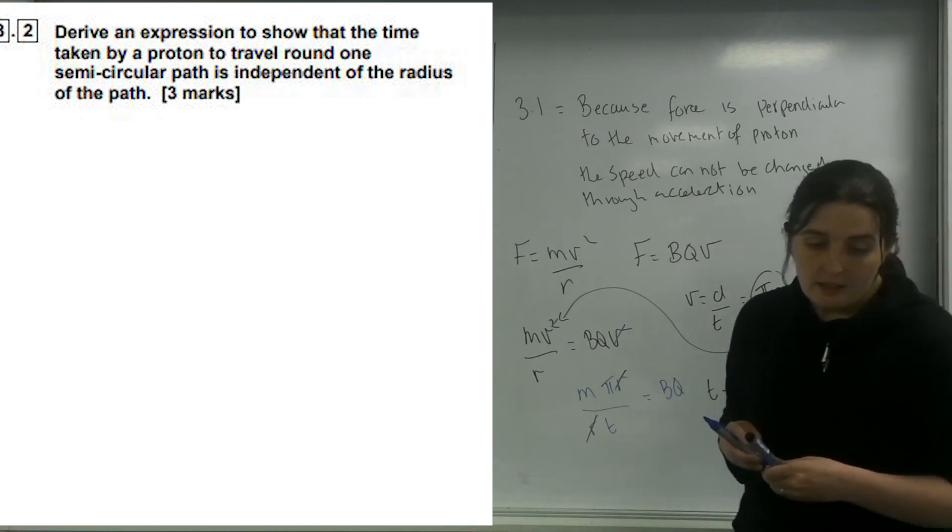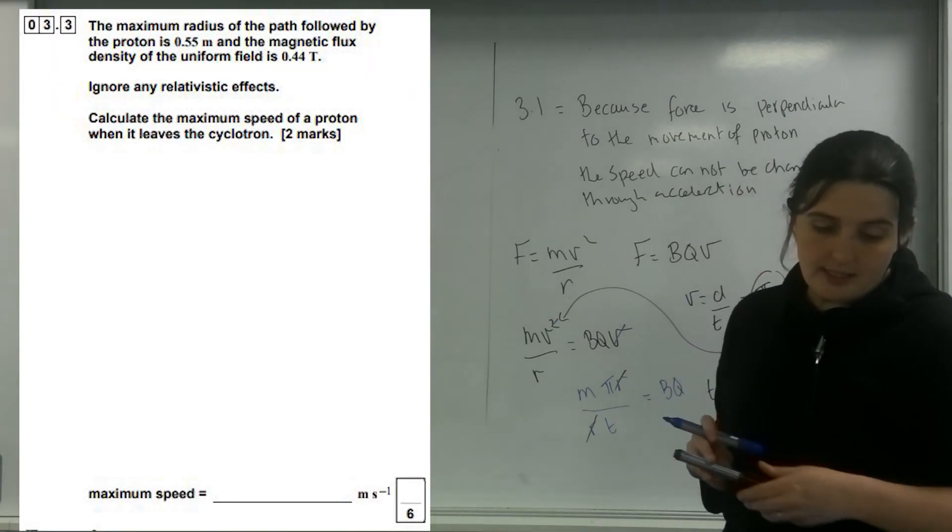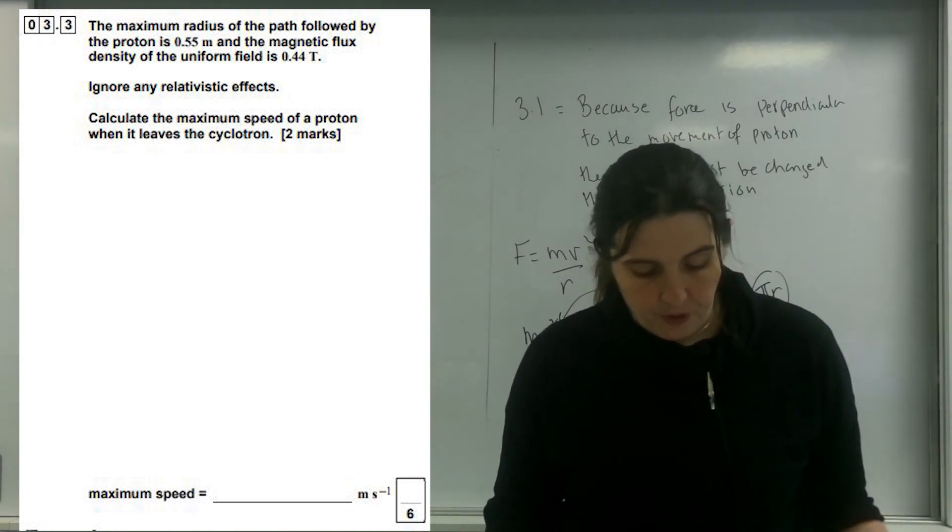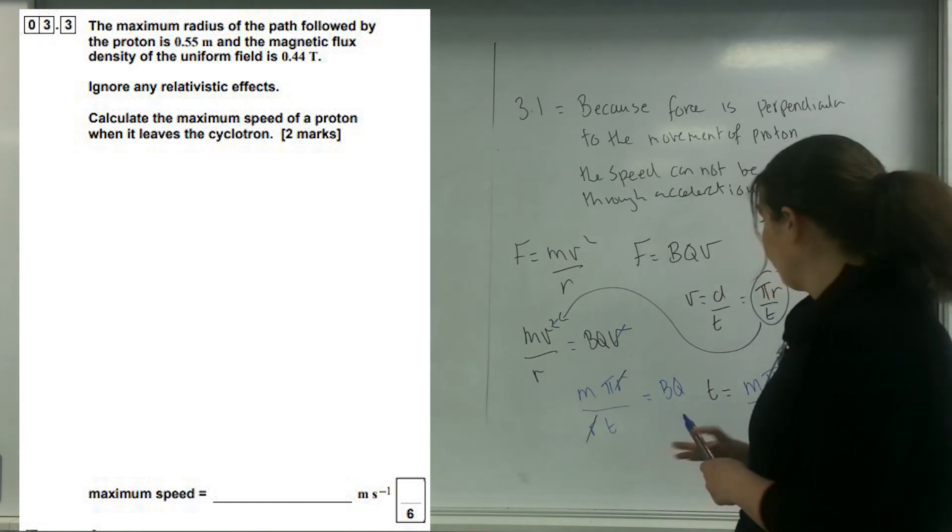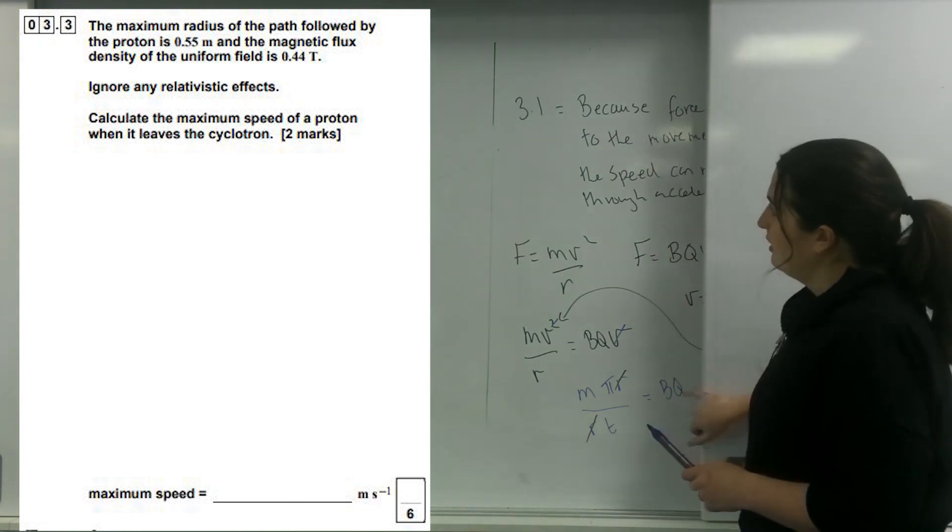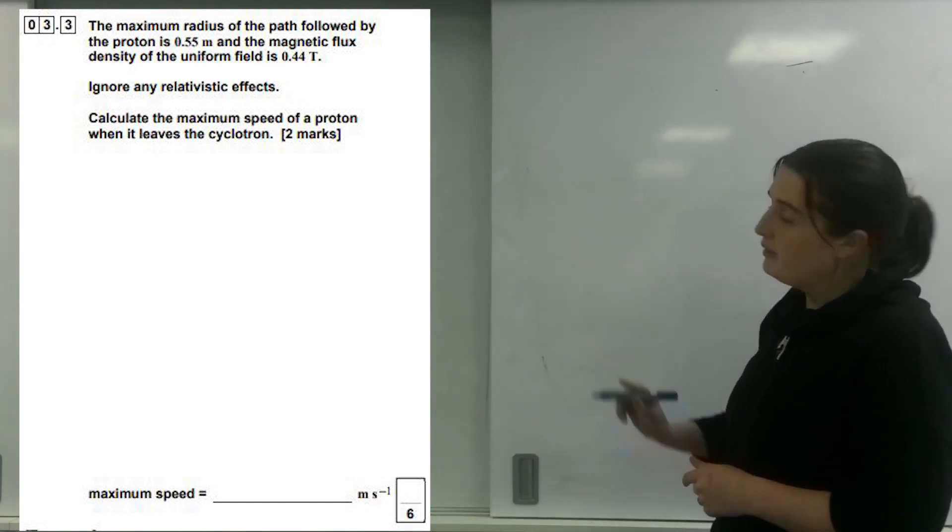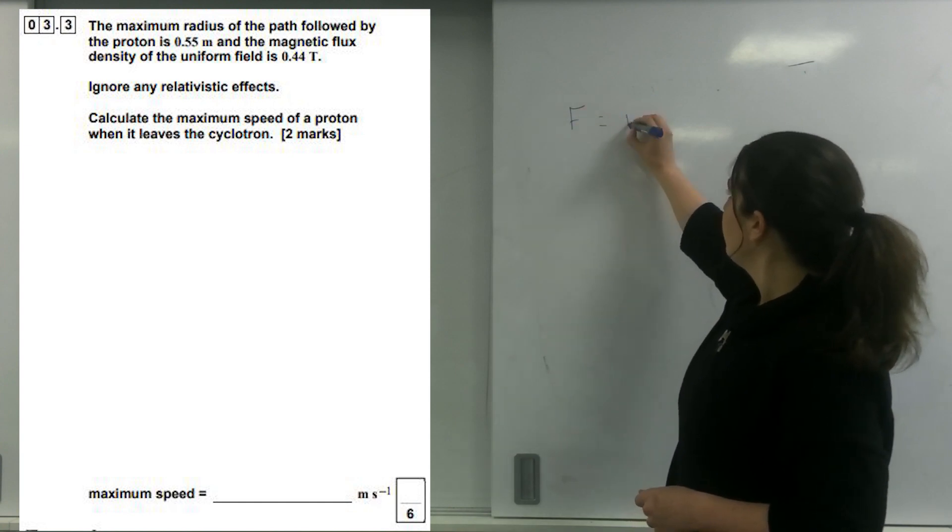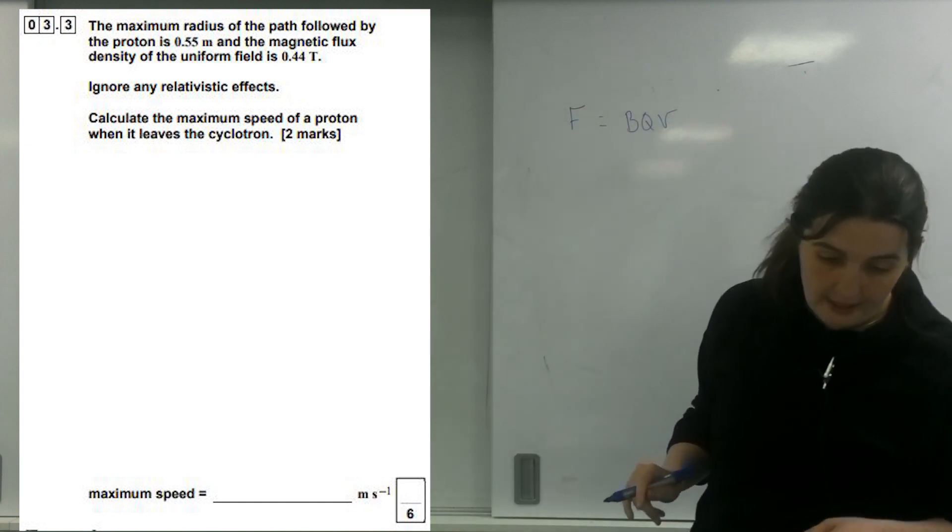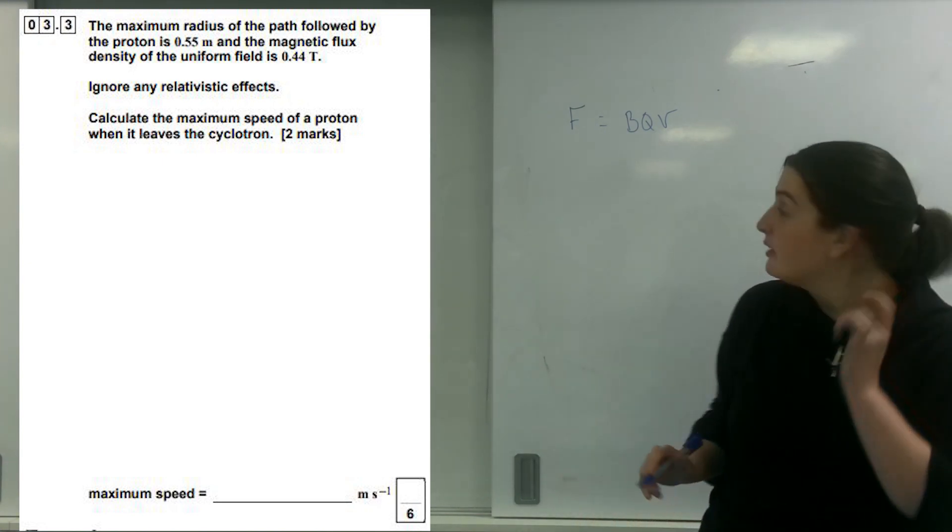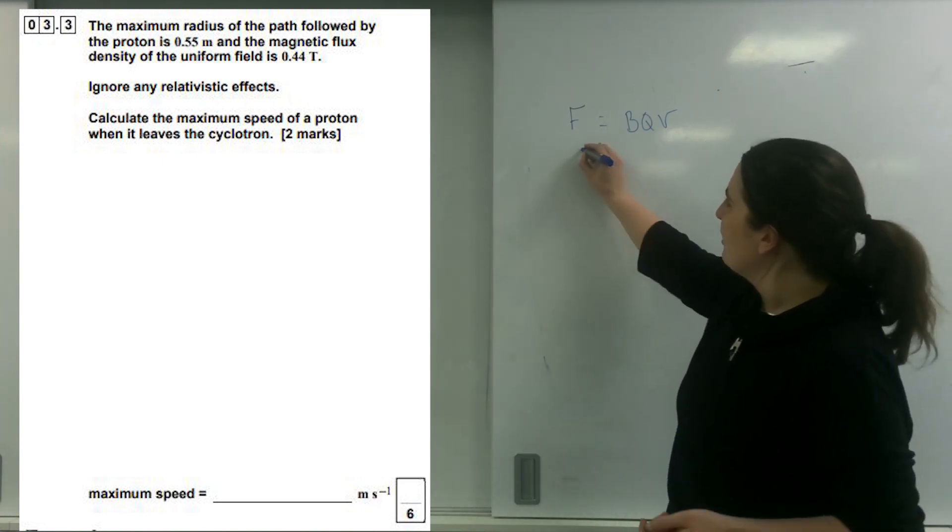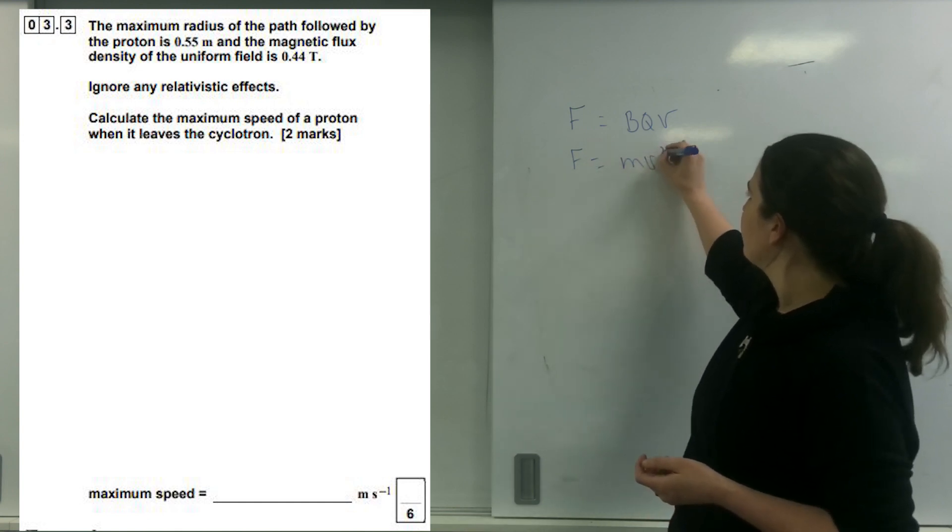The question says the maximum radius of the path followed is 0.55 and the magnetic flux density of the field is 0.4 tesla. Calculate the maximum speed of a proton as it leaves the cyclotron. I know that force equals bqv, and I want the maximum speed, and I know f equals mv squared over r.